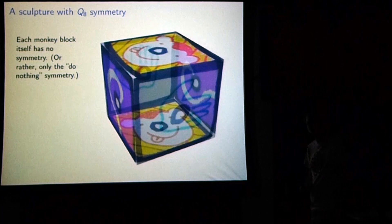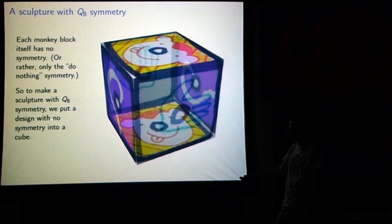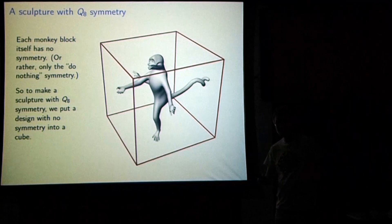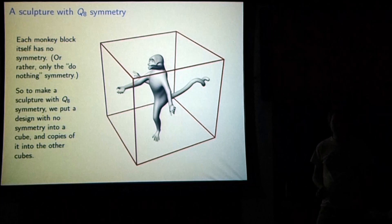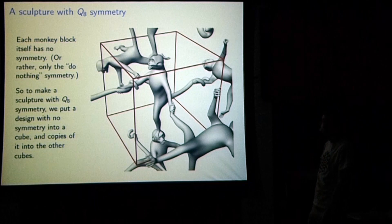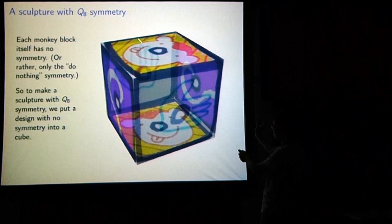How do we make a sculpture which has this bizarre four-dimensional symmetry group? We put a design with no symmetry into a cube. Here we go — this is a monkey. Monkeys sometimes have bilateral symmetry, but my brother arranged this monkey so that he doesn't have that symmetry. Then we put copies of this monkey into the other seven cubes, arranged in the same way so that the monkey-block cubes match up with each other. When I move from this guy to the next guy, I'm doing this left-handed twist again.